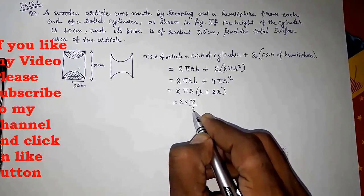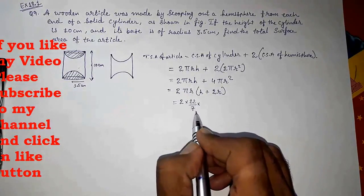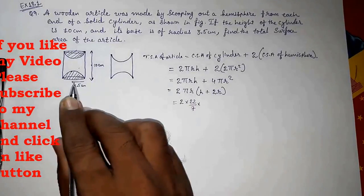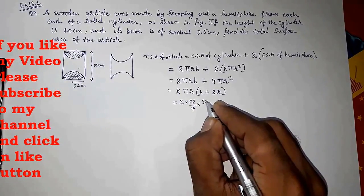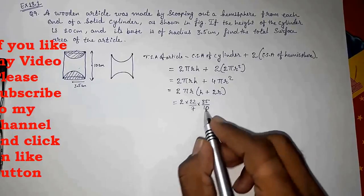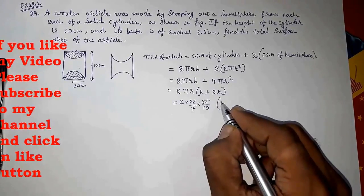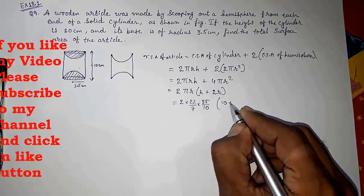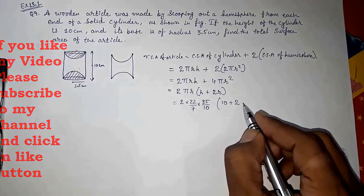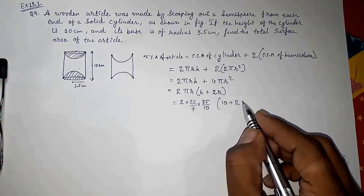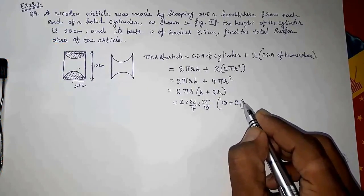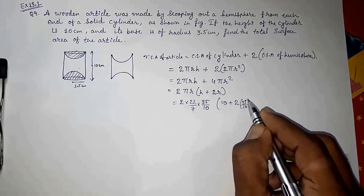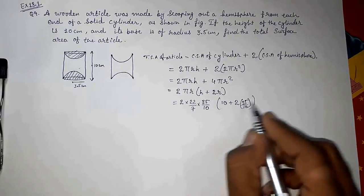2, 22 by 7. Value of π is not given, so we are going to take 22/7. This is given to us 3.5, so I'm going to take 35 by 10. Now height is 10 plus 2. Here also if we want to take, we can take 35 by 10, we can take 3.5 also, whatever.